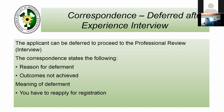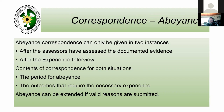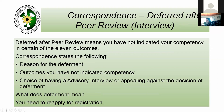The abeyance correspondence can only be given in two instances: after the assessors have assessed the documentary evidence and say you have not got enough experience and give you 12 months to get that experience, or after the experience interview in the same situation. The period of abeyance is 12 months. The correspondence identifies the outcomes requiring the necessary experience. Abeyance can be extended if valid reasons are submitted, but only one time.